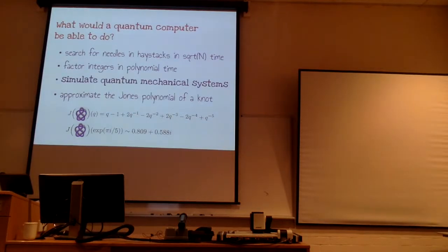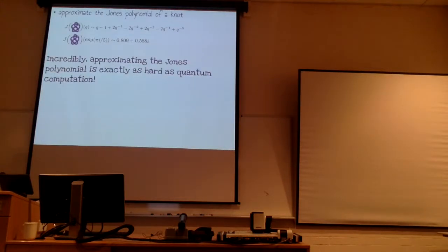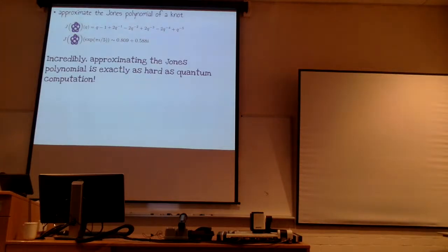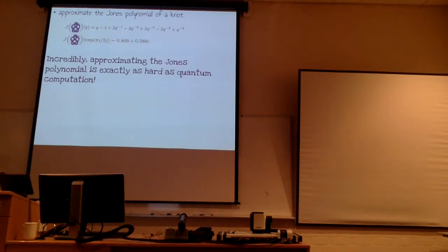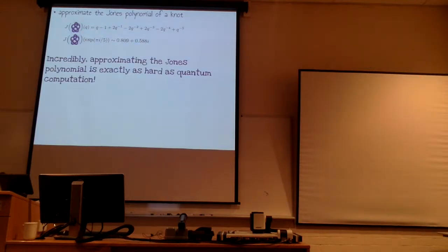That seems like an awfully specialized and specific thing to have on this list. The reason I've got that last one there is that, incredibly, this problem of approximating the Jones polynomial at some root of unity is exactly as hard as all of quantum computing. What this means is: if one of you had a knack for doing this problem — I hand you a knot and a root of unity and you can snap back a good approximation in polynomial time — then we wouldn't need to bother building quantum computers. You'd be able to simulate a quantum computer with just your ability to do this evaluation plus an old-fashioned classical computer. So these are equally hard problems.